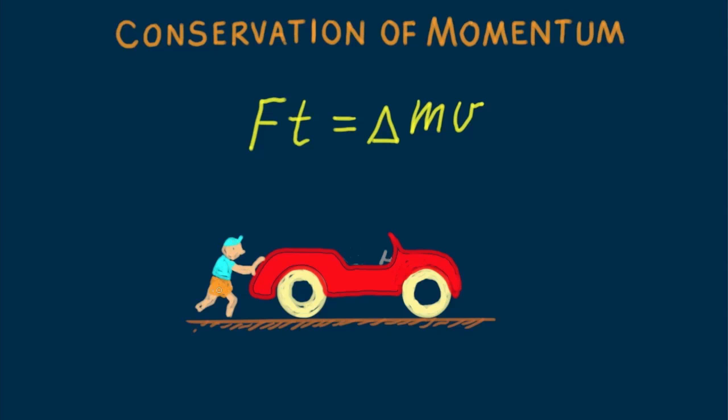To make the auto gain momentum, you'd have to get outside and push from outside. Only an external impulse changes momentum.